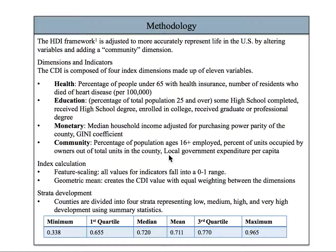This dimension goes beyond the HDI methodology to reflect metrics of local success and opportunity in the context of the United States. Local government expenditure reflects the amount of money spent by community officials on health, education, and social services accessed by residents every day.